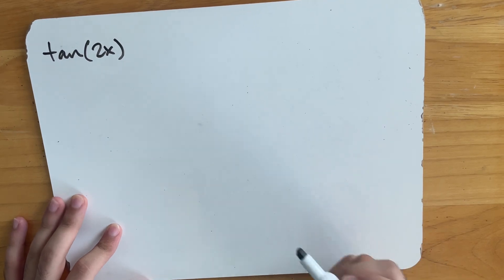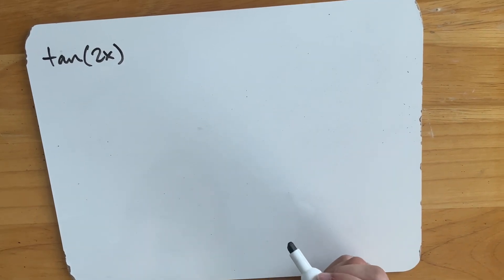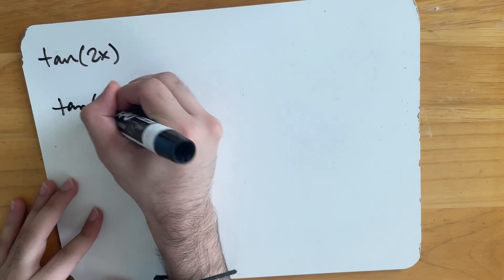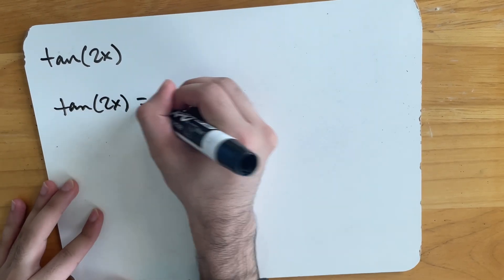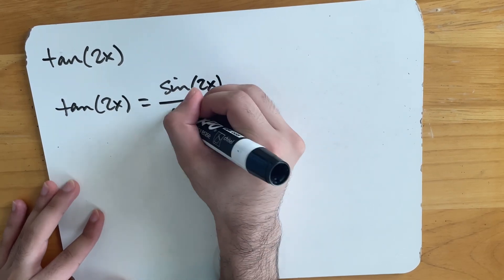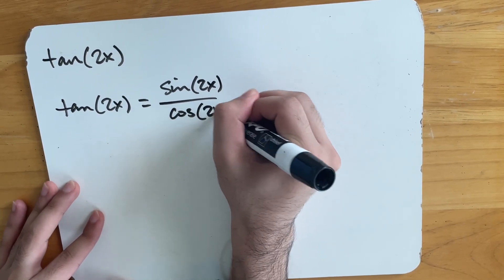So derivation is really simple. If you just use the fact that tan of 2x is equal to sine of 2x over cosine of 2x. So sine of 2x over cosine of 2x, right?